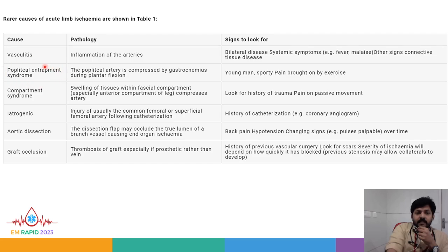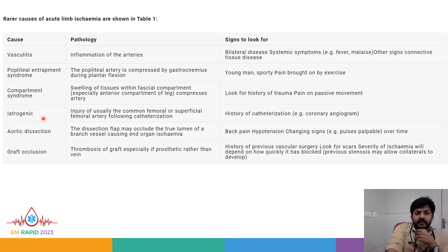To rule out popliteal entrapment syndrome, the popliteal artery is compressed by the gastrocnemius during plantar flexion — usually seen in a young man after heavy exercise. Compartment syndrome means swelling of tissues within the fascial compartment, especially the anterior compartment of the leg, which compresses the artery. Always look for history of trauma and pain on passive movement of the foot. Iatrogenic causes include injury of the common femoral or superficial femoral artery following catheterization, usually seen after coronary angiograms.